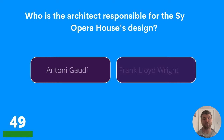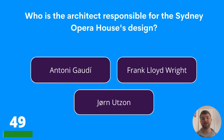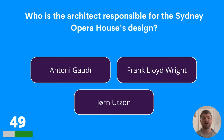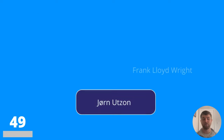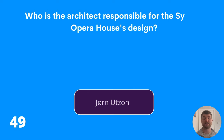Question forty-nine: who is the architect responsible for the Sydney Opera House's design? Anthony Gaudí, Frank Lloyd Wright, or Jørn Utzon? The answer is Jørn Utzon.